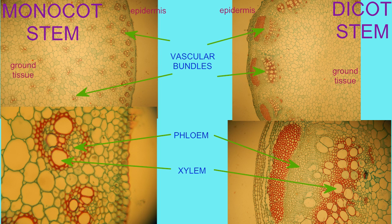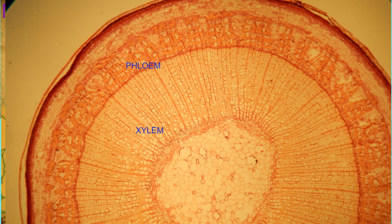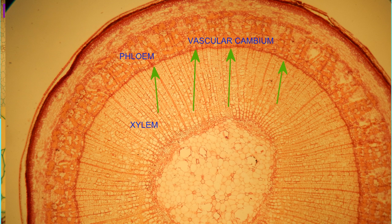This ordered structure in dicots allows the parenchyma and pericycle between the xylem and phloem to fuse and thus form a continuous layer all around the stem known as the vascular cambium. This is a lateral meristem, which then allows more lateral growth, or secondary growth.